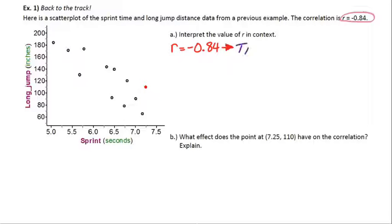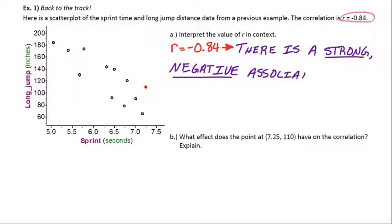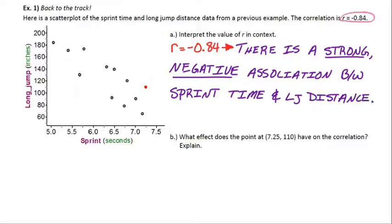Without even looking at the graph, what does negative 0.84 mean? Well you know it's a negative association and 0.84 is pretty strong. So without even looking at the graph, we already know there's a strong negative association between sprint time and long jump distance. That's how you'd interpret an r value.